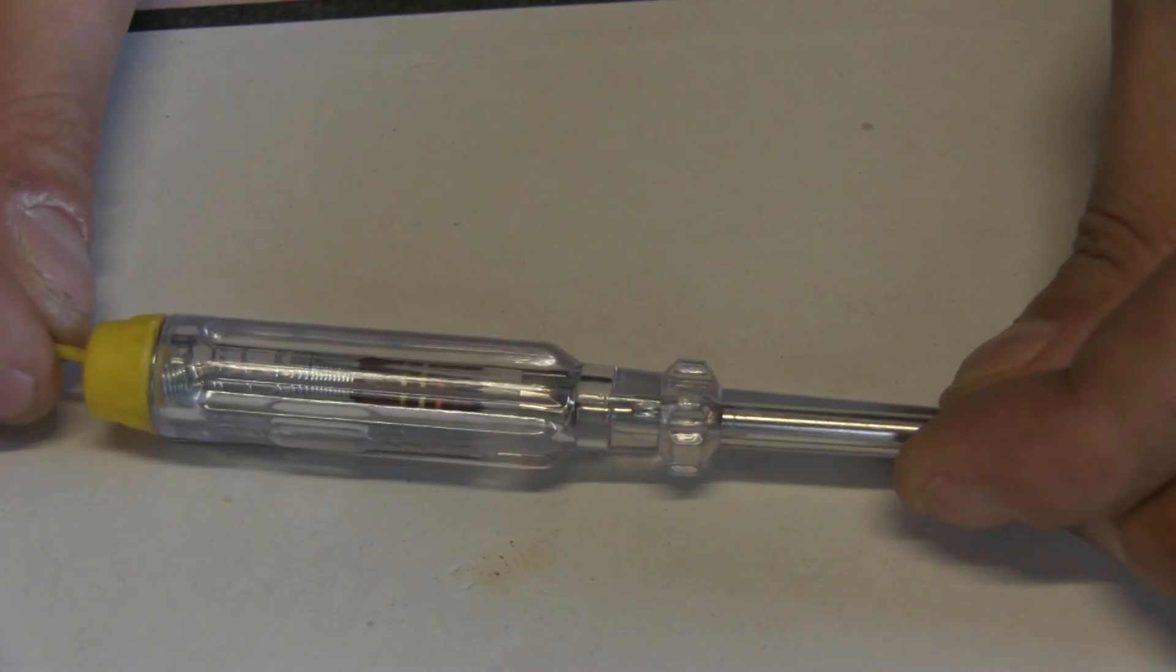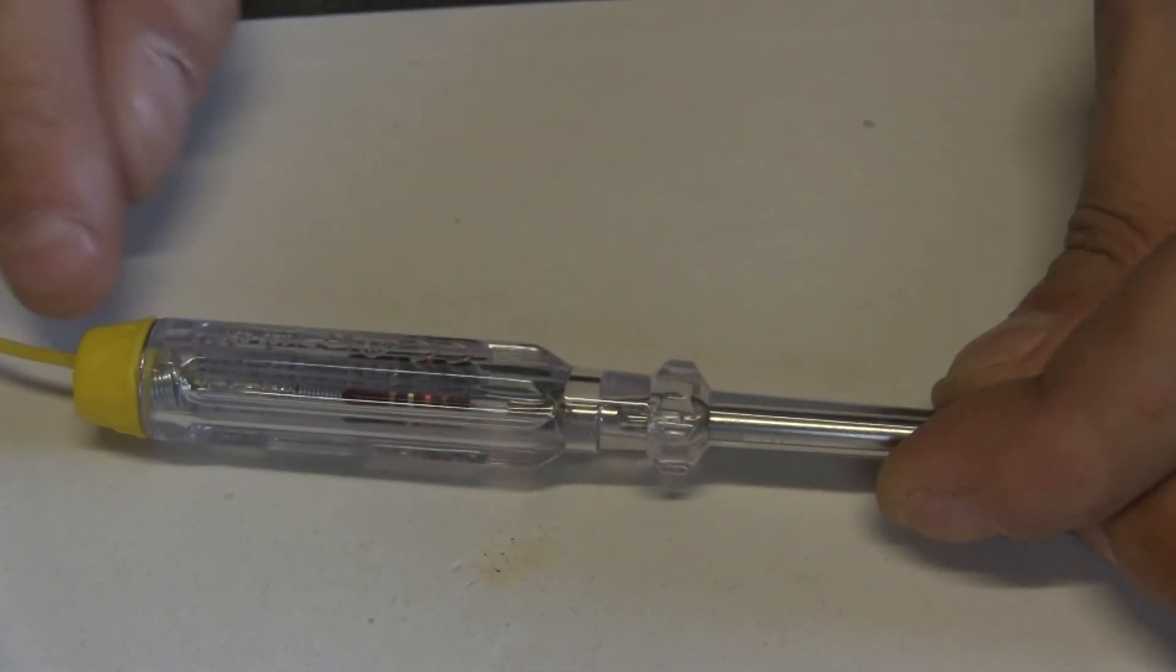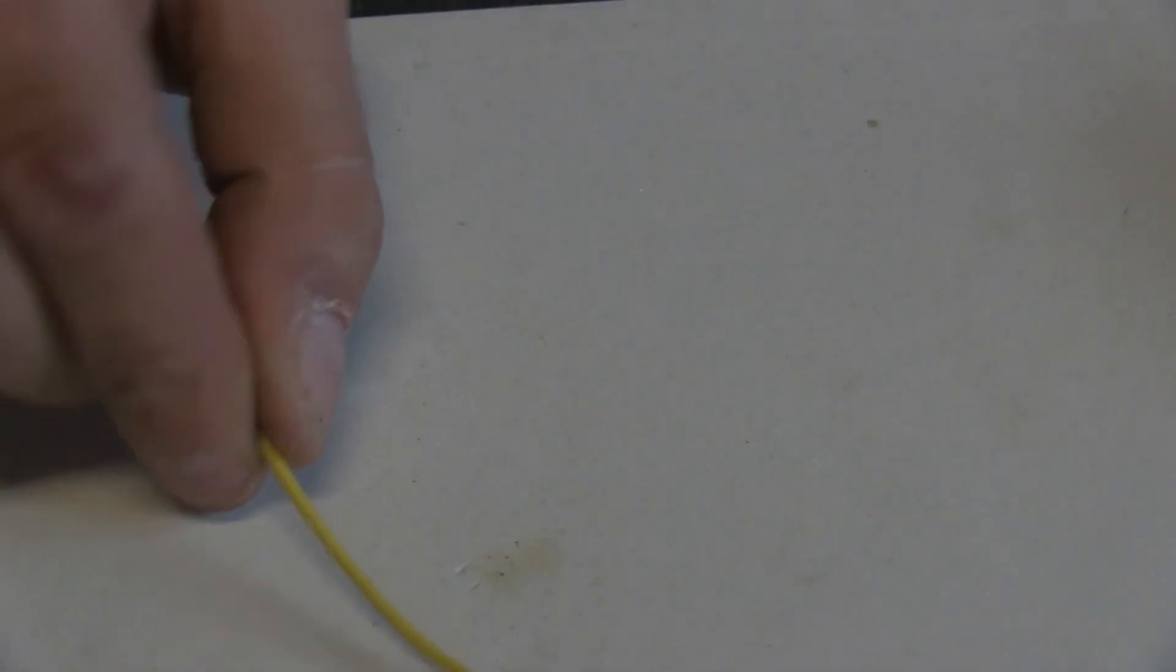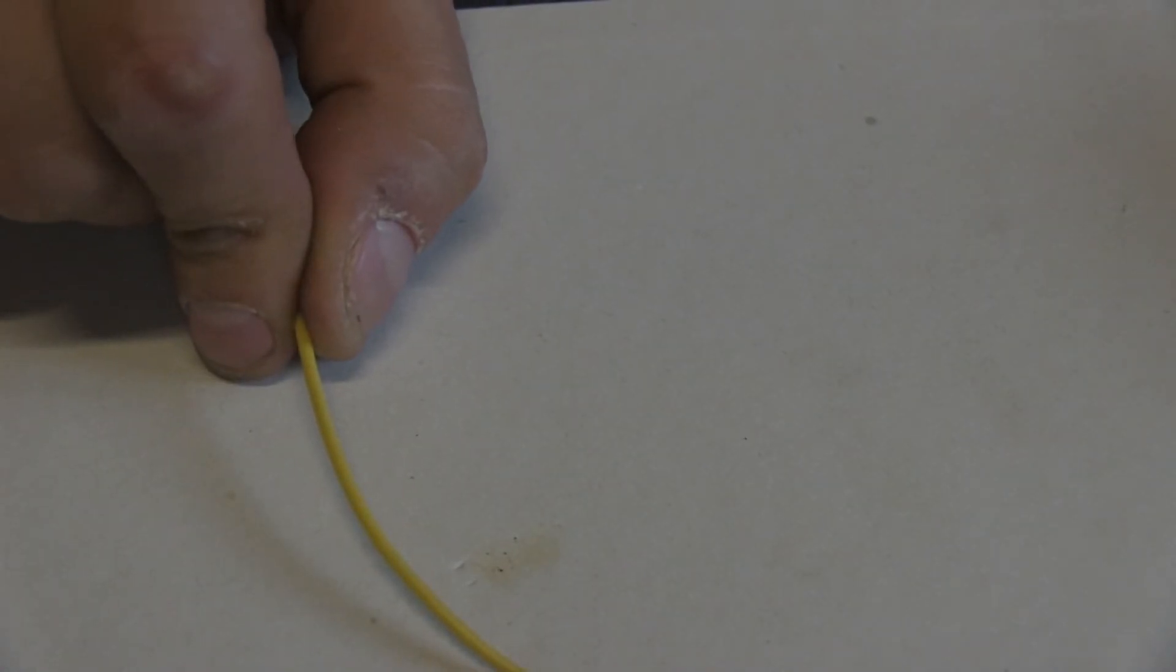So you can see here, the spring is adding some tension to the contact over here. We have the wire coming out, and there's no metal contact so you can touch it. And now, last thing I'm going to do is I'm going to solder the alligator clip at the other end, and that's going to be it.